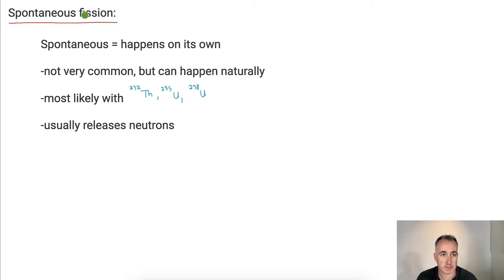Let's go deeper into this with spontaneous fission. That's when something just happens on its own. It's not super common, but it does happen naturally. Thorium-232 does it, uranium-235 can, uranium-238 can. But usually the key thing is it releases neutrons. Remember what a neutron is? We'd normally write it with an N for neutron, and it's got one nucleon and zero protons because it's not a proton.